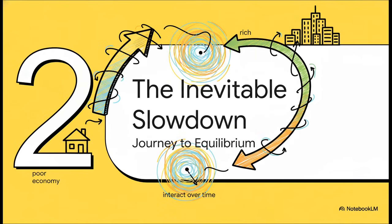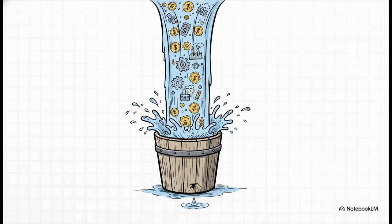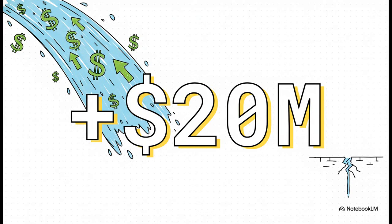This is where it gets really interesting. The way these two forces interact over time actually explains something we see all the time in the real world: why countries that start out poor often grow way faster than countries that are already rich. Picture a brand new economy starting from scratch — it doesn't have a lot of machines, so the total wear and tear is super low. That leak in the bucket is just a tiny drip. Every new investment, like giving a village its very first tractor, has a massive impact. The result? Rapid growth. In those early days, the net growth is just huge — you're pouring water in and almost none of it is leaking out.